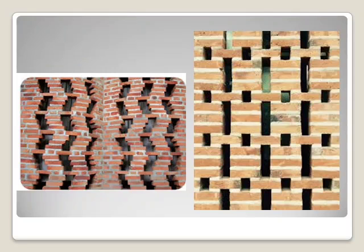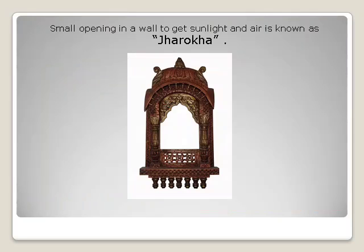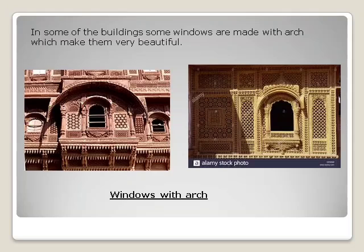This slide shows a small opening in a wall which is known as the Jharoka. They are usually built for ventilation, for sunlight and air to get in. Some buildings, especially old monuments, have windows with an arc which make them look beautiful. This slide shows you some windows with an arc.